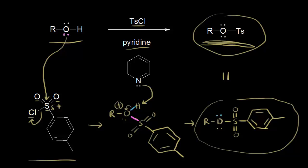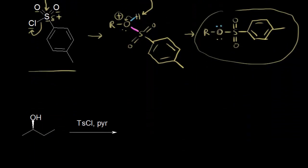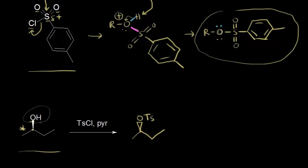One reason to form a tosylate would be to have a better nucleophilic substitution reaction. Let's look at first forming a tosylate from this alcohol over here on the left. We know that this carbon is a chiral center, but if we're forming a tosylate, the tosylate forms at this oxygen here — the reaction does not occur at the chirality center. The oxygen would now be bonded to a tosylate group, which is a much better leaving group than OH, and is an excellent leaving group for nucleophilic substitution reactions.